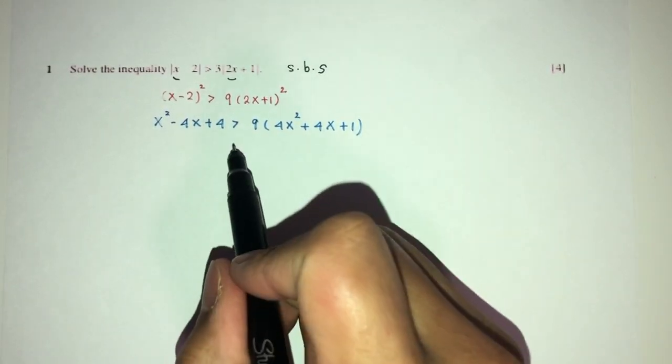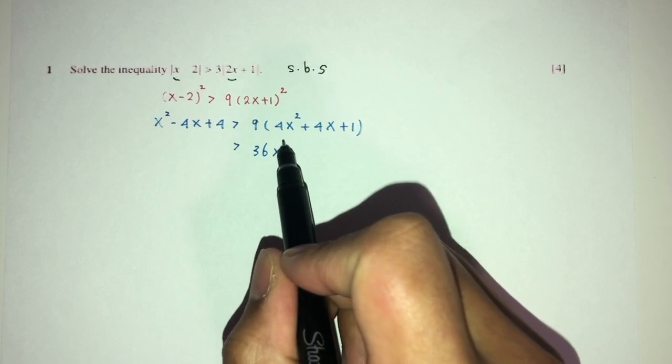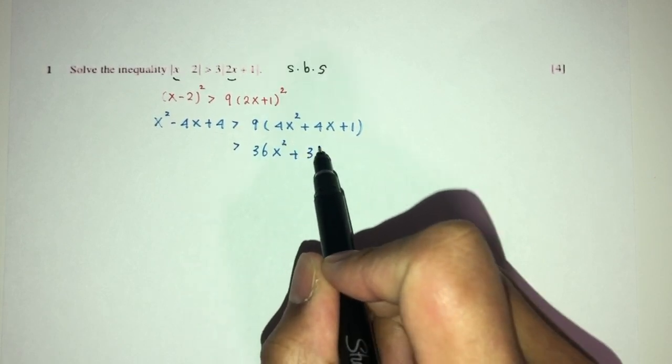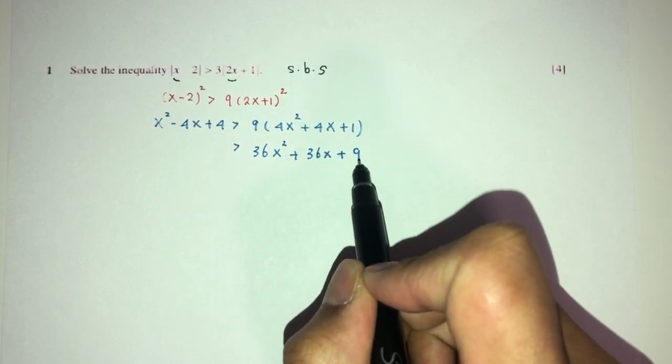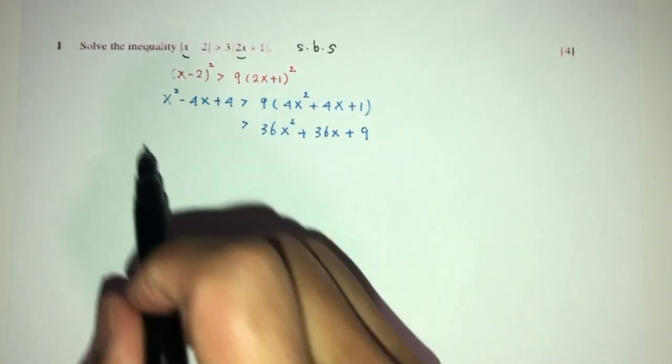Now, let's try to simplify this. That would be 9 times 4 is 36x², this one plus 36x and plus 9. Now, we can send everything to one side.